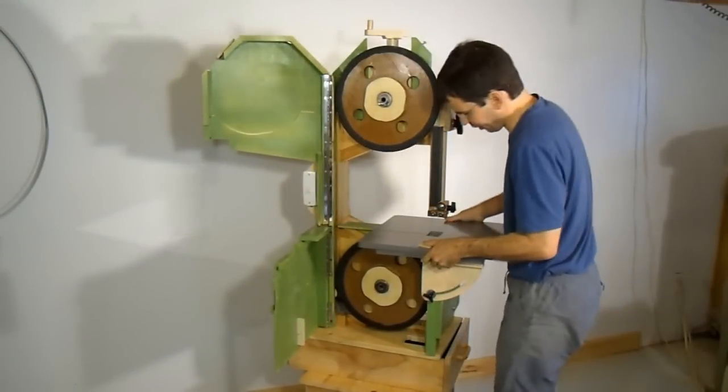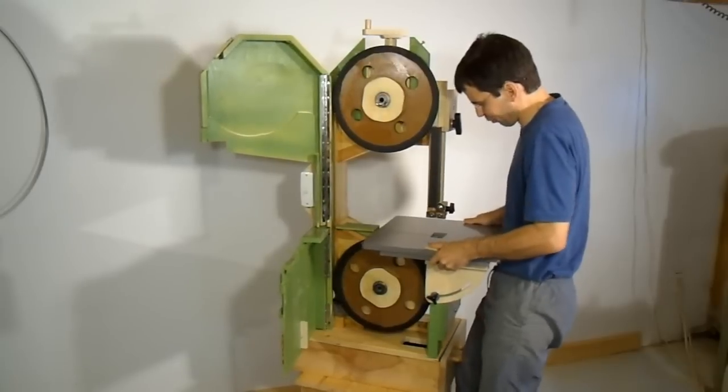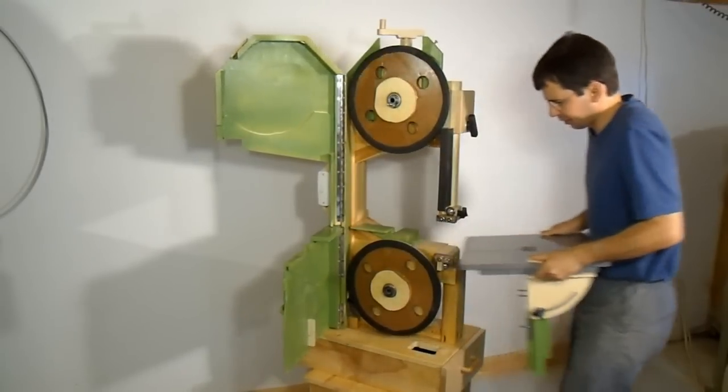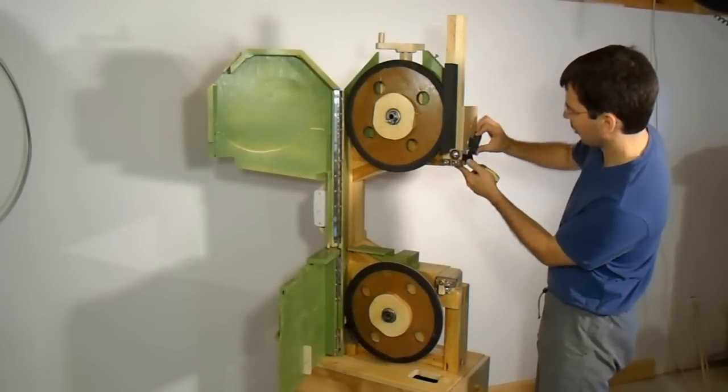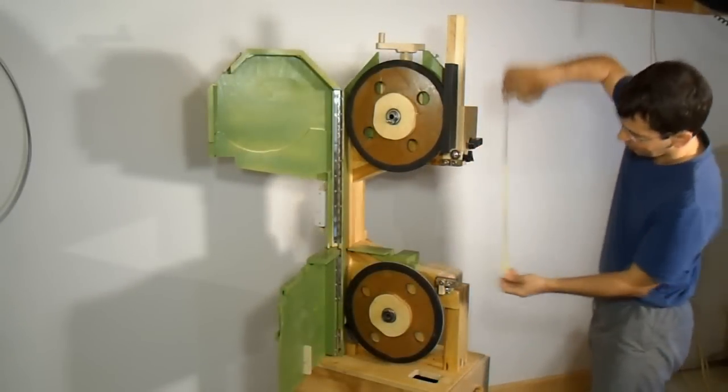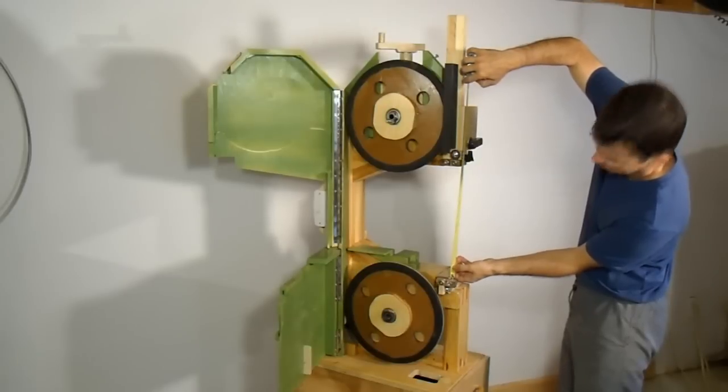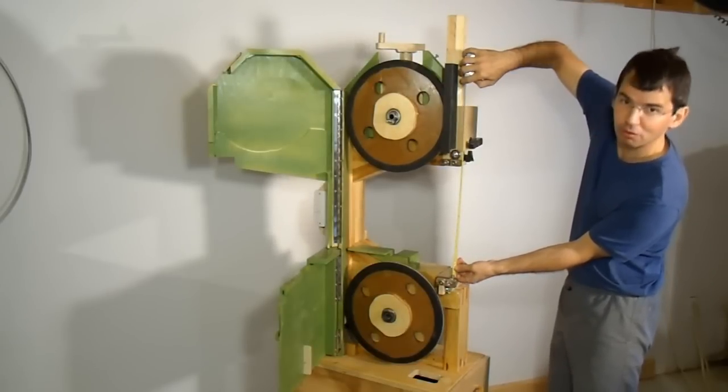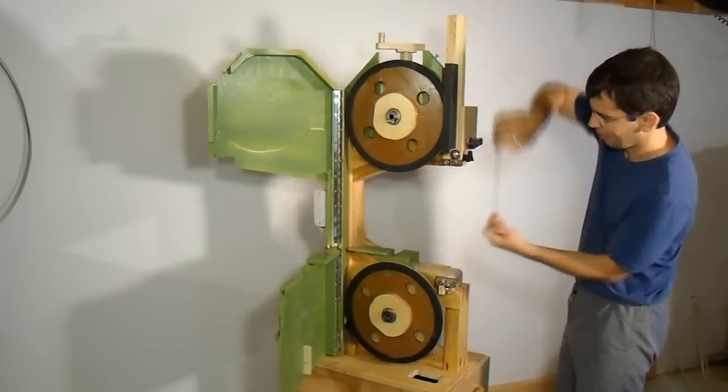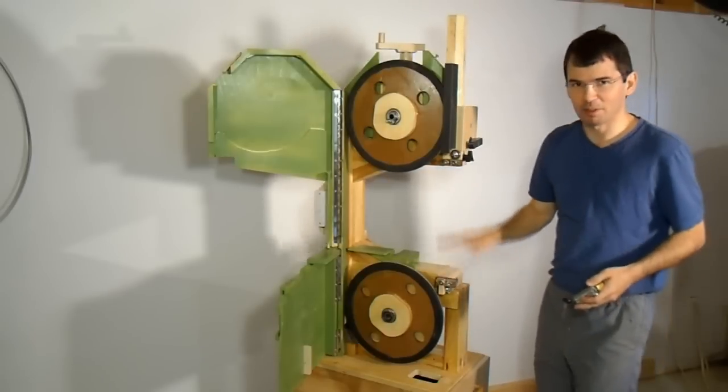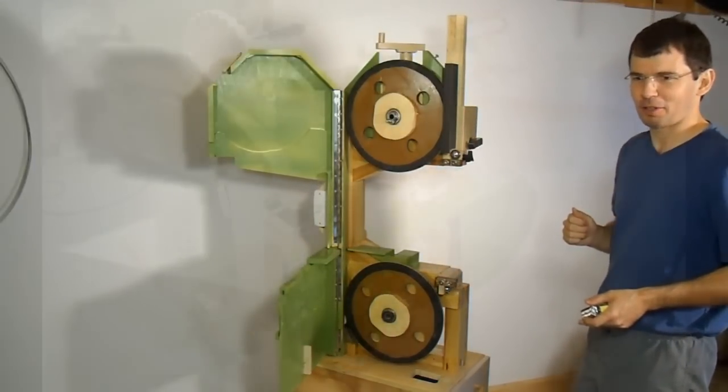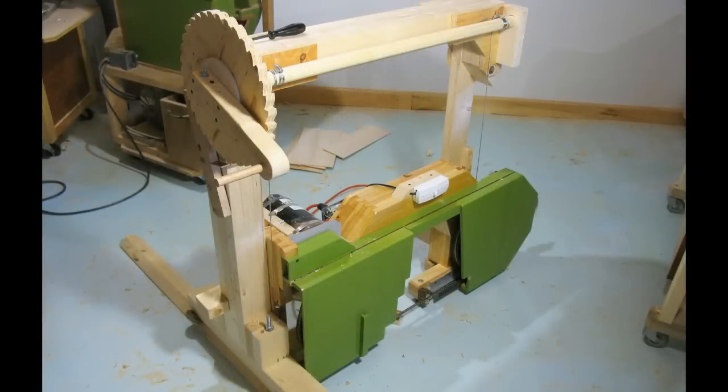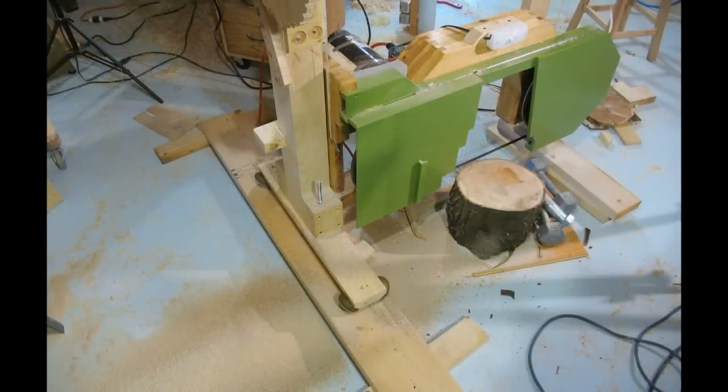The table on this bandsaw is actually relatively easy to remove. Now with the table removed and the upper blade guide all the way up the distance between the blade guides here is actually 35 centimeters or 14 inches. The reason I want so much distance between the blade guides is the reason I actually built this saw is to try to use it as a sawmill. I'm still experimenting with using this bandsaw as a sawmill and I'll have more about that in next week's video.